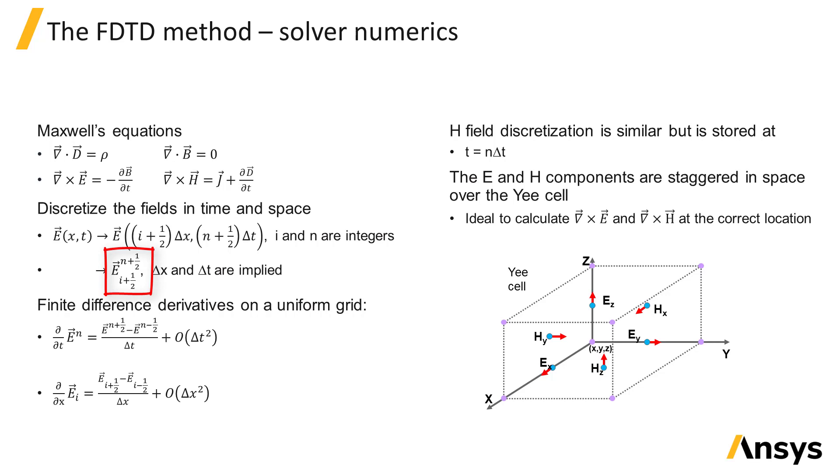The E fields are solved at time N plus 1 half while the H fields are solved at time N. The derivatives in both space and time are handled with finite differences and are second order accurate when the grid is uniform. The electric and magnetic field components are distributed in space over a unit cell called the Yee cell. This staggering of the fields in space is ideal for calculating spatial derivatives of the curl terms at the correct positions in space.